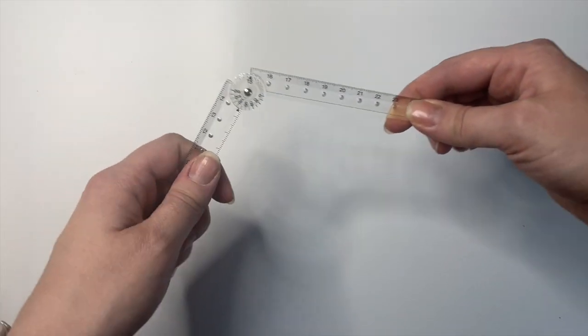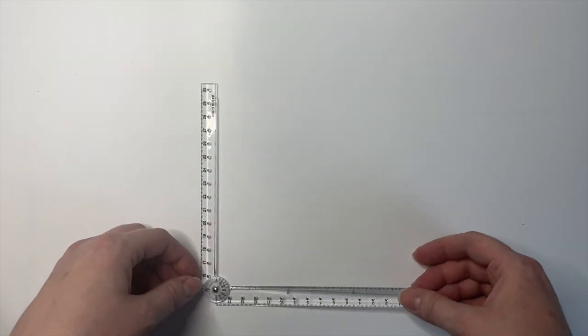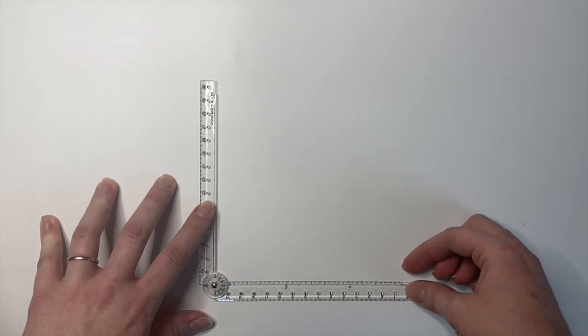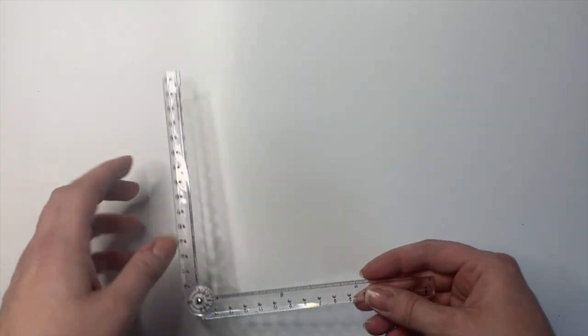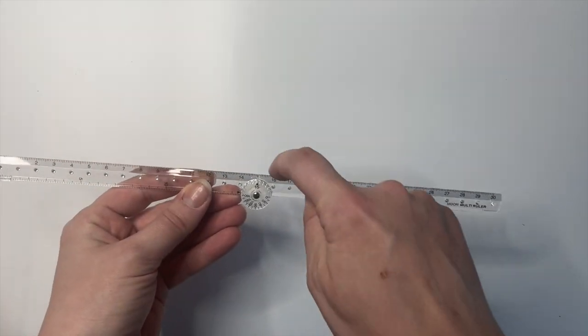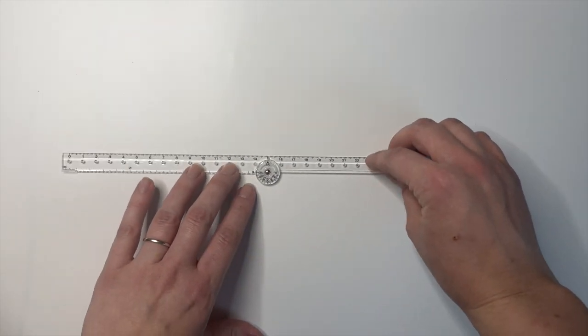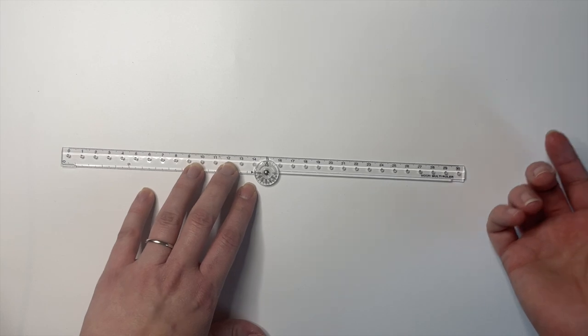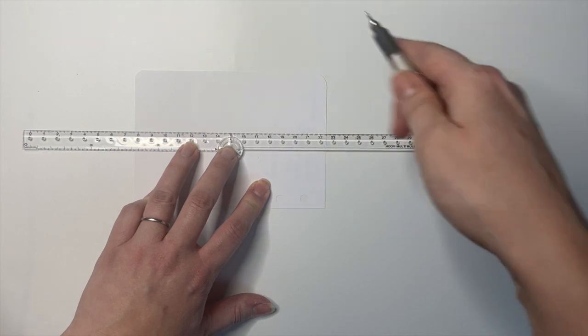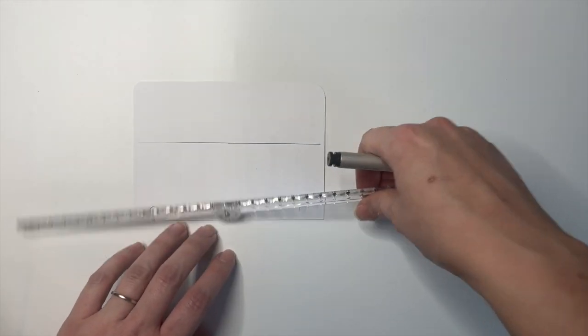And I like that it's clear because you can easily see what you're measuring. And it also has a protractor on here, which I think is pretty cool. If you're trying to make sure that something is completely square and straight, especially if you're doing bullet journal spreads or something, I think that would be really useful. And when you extend it all the way like this, there's hardly any bump there at all.